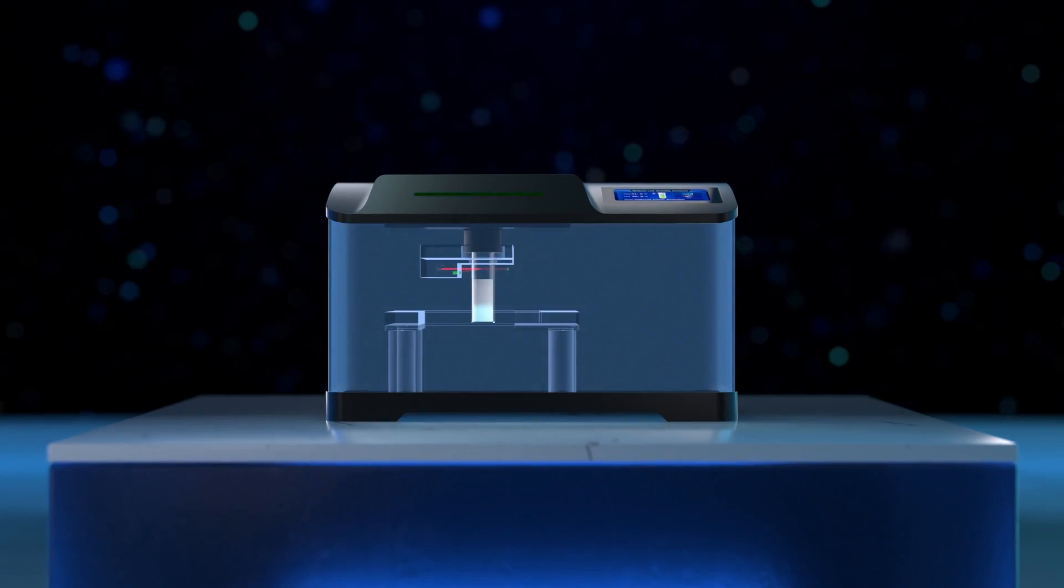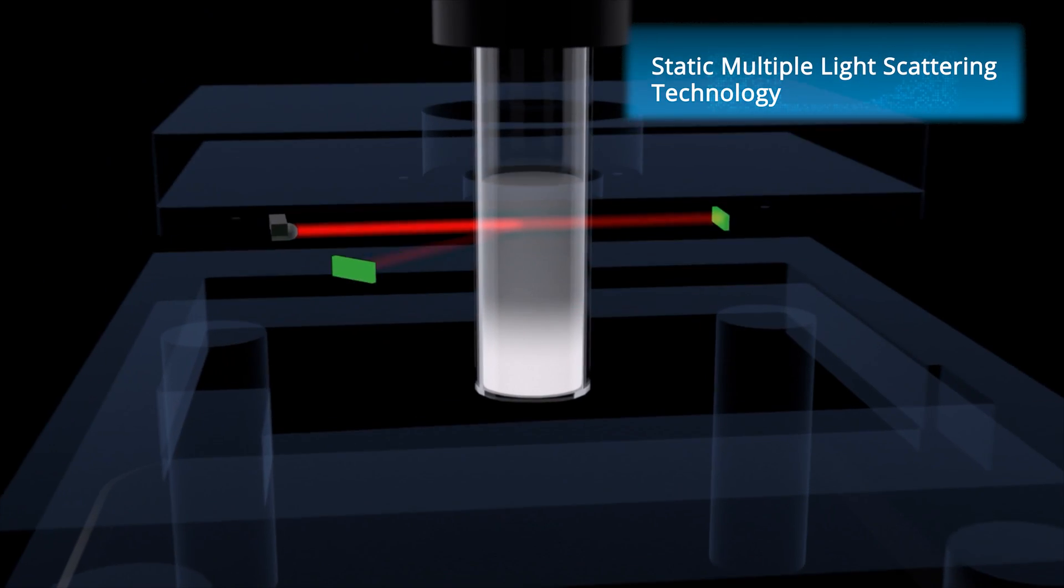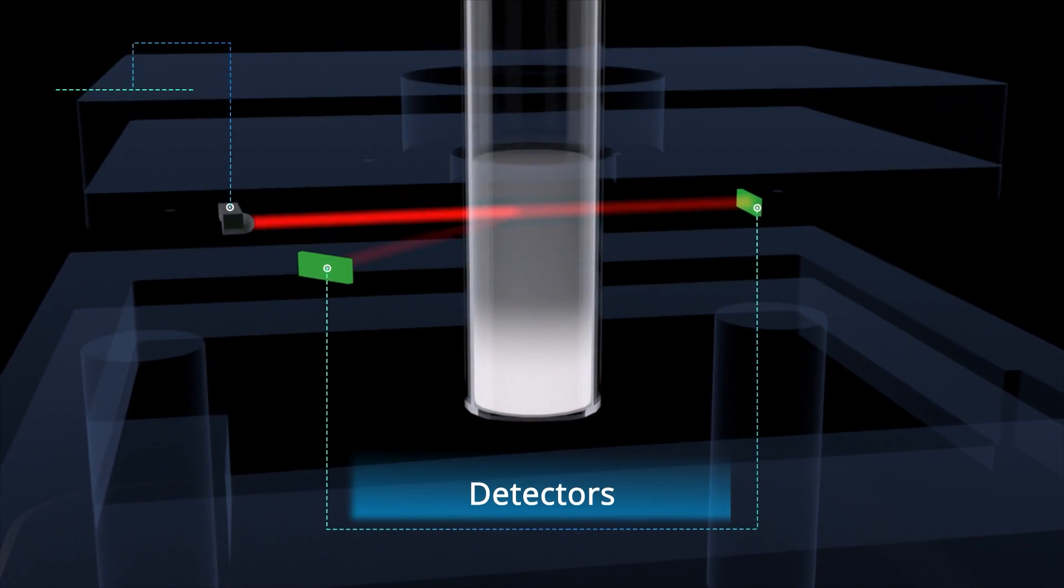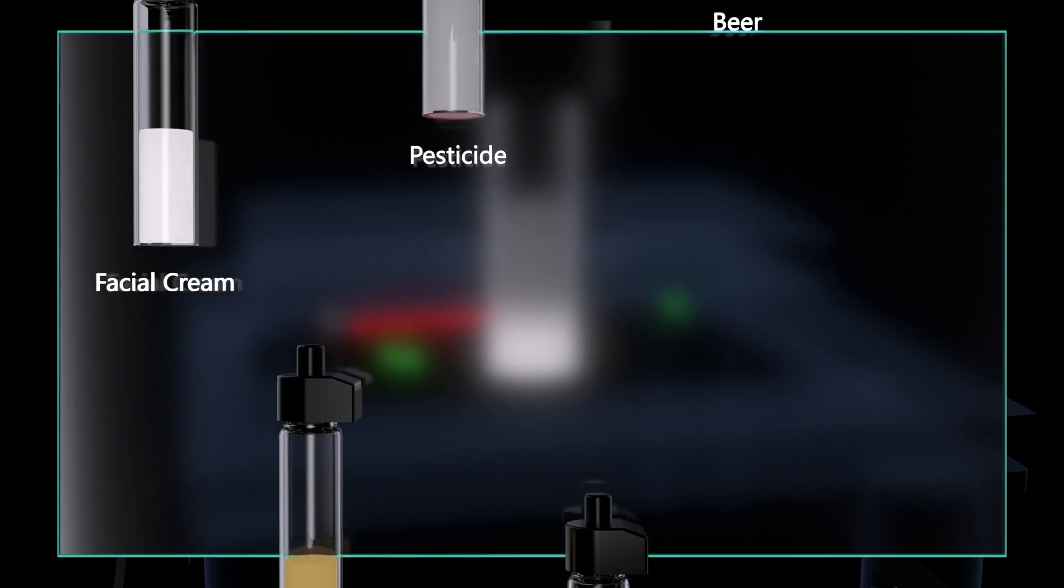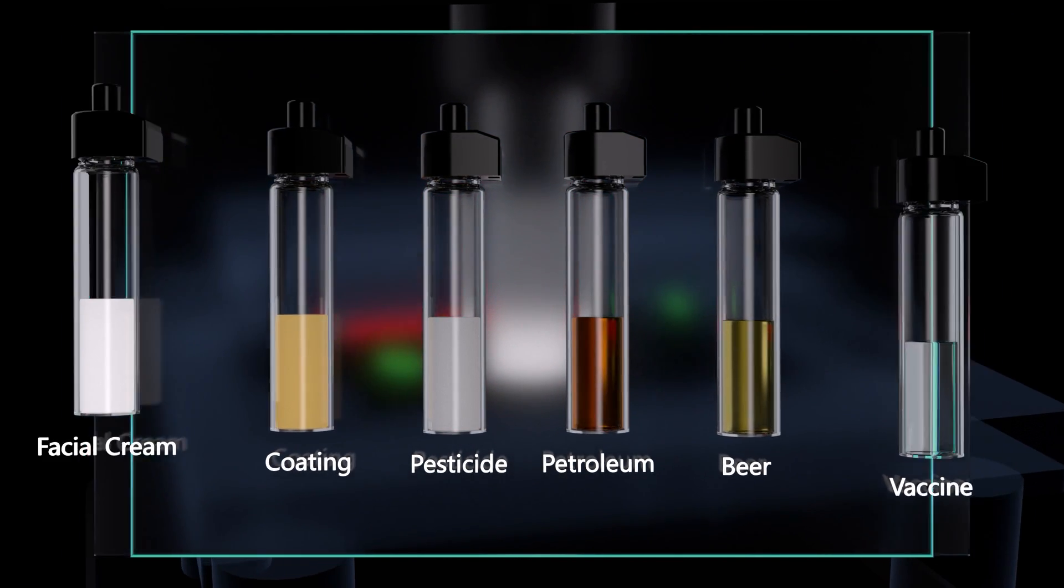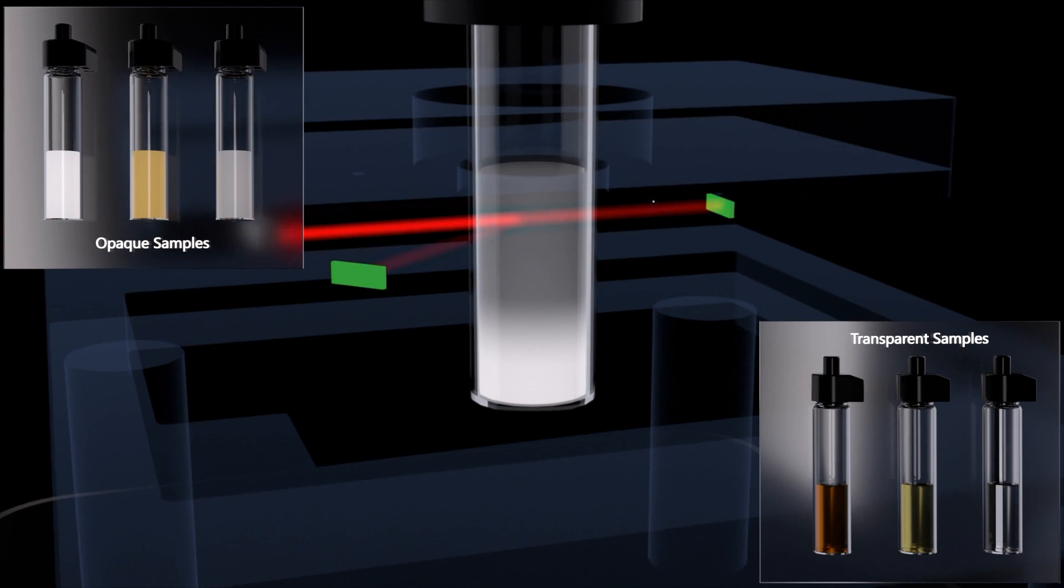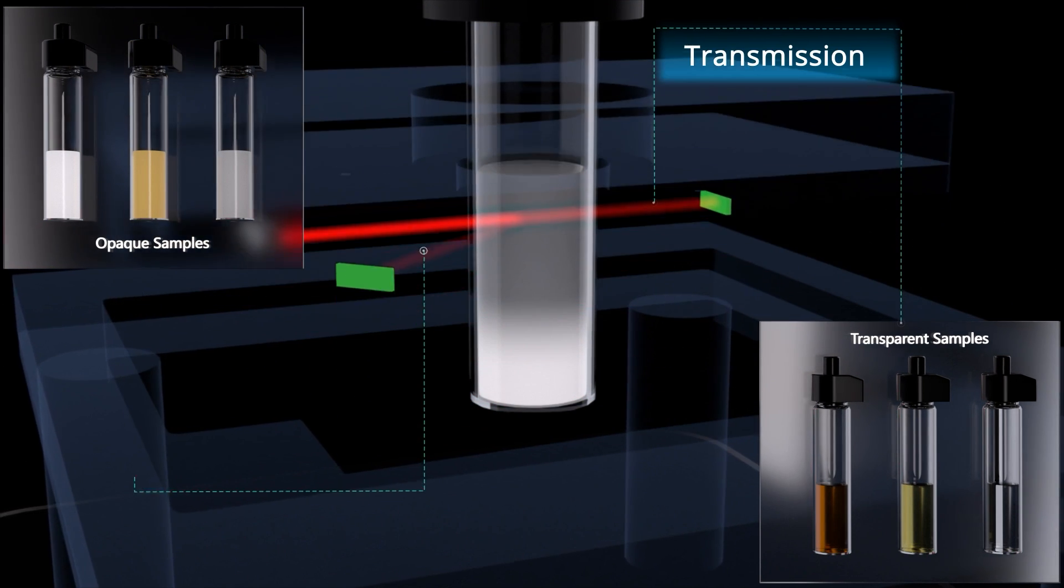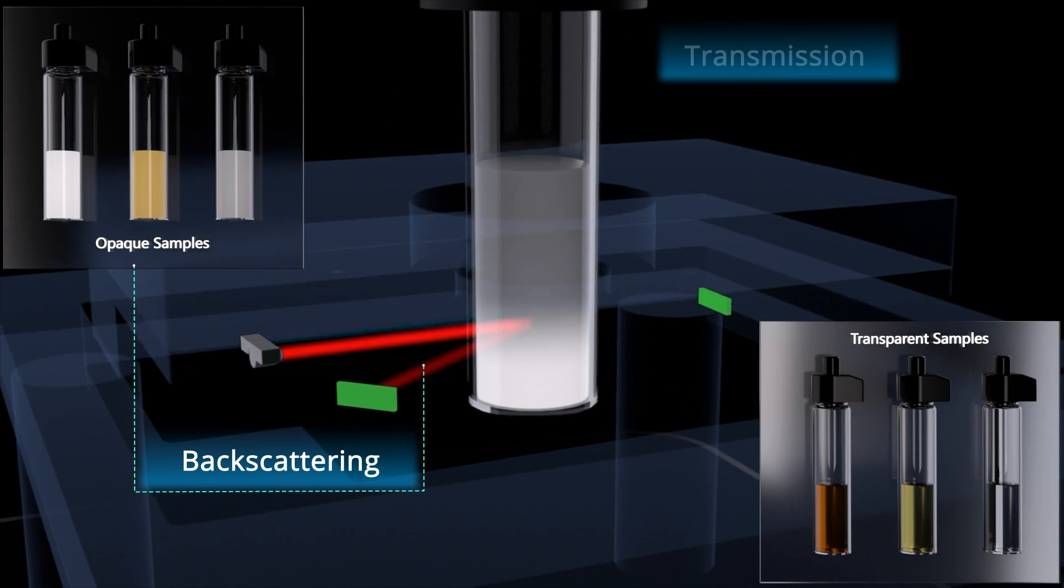At its core, Bscan Lab leverages SMLS technology with two detectors for transmission and backscattering. This allows for non-destructive analysis across a wide range of concentrations, up to 95% VV. Transmission caters to transparent samples, while backscattering excels with opaque samples.